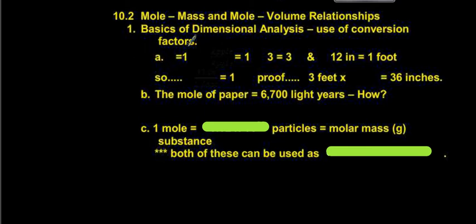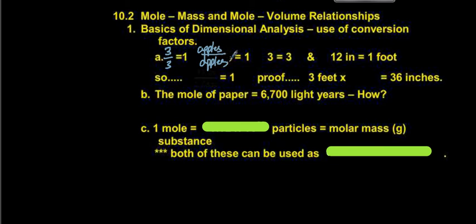Bear with me here and let's try some of these out. We know that 3 over 3 equals 1 — 3 divided by 3 is 1, so those two are equal to each other. We also know that if we compare units, like apples to apples, if we divide by the same unit, that also equals 1. We know that 12 inches equals 1 foot, so if we make a fraction 12 inches over 1 foot, that also equals 1, because we know they're equal to each other.